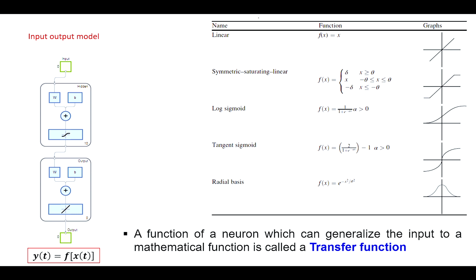There is an important terminology called transfer function. This transfer function tries to model f(x) given the value of x. If you see a straight-line relationship — whatever input you give, there is a direct relationship — then go for a linear transfer function. On the other hand, if the value of y increases as x increases but after a certain point there is no further increase, you should choose a symmetric saturating linear transfer function.